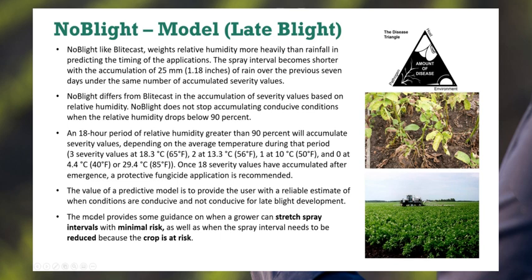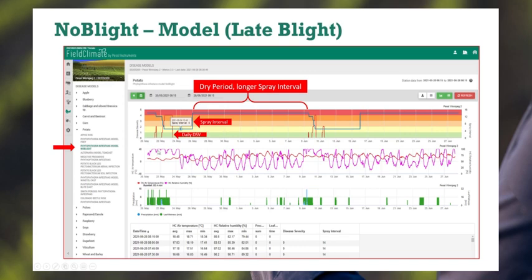The value of the predictive model is to provide users a reliable estimate of when conditions are and are not conducive for the development of late blight. The model provides guidance on when a grower can stretch the spray interval with minimal risk, as well as when the interval needs to be tightened because the crop is at risk. Looking at the No-Blight model here, we see the DSV values climbing — it's more sensitive to humidity and leaf wetness. You can see the spray intervals: as disease severity values climb, the spray interval gets down to five days; as it dries out, it goes up to 14 days and stays long when there are no real disease severity values.